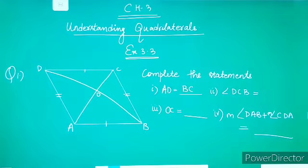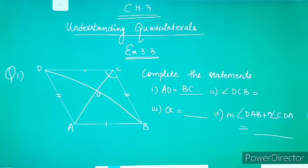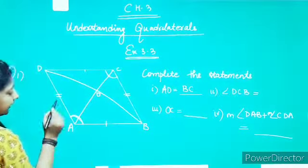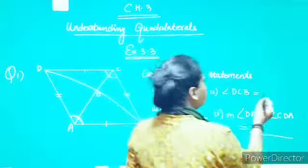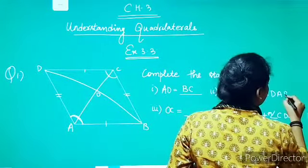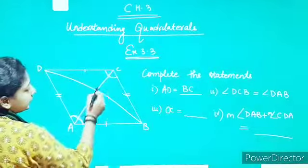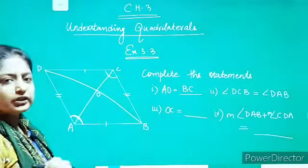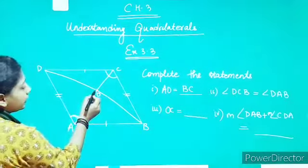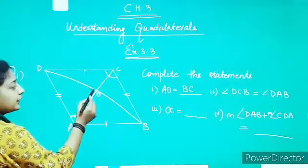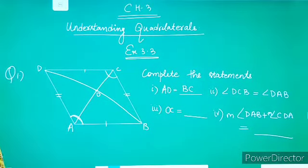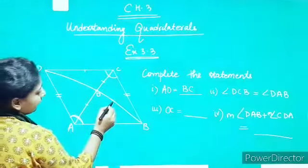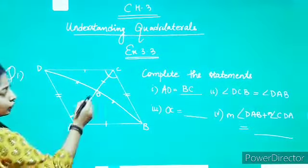Second part: angle DCB. We know by the properties of the parallelogram the opposite angles are equal. So the angle opposite to angle DCB will be angle DAB. So angle DCB equals to angle DAB. Next, OC equals to — when we did the properties of parallelogram, we discussed that the diagonals bisect each other. That point divides both diagonals into two equal halves. So OC is equals to OA.